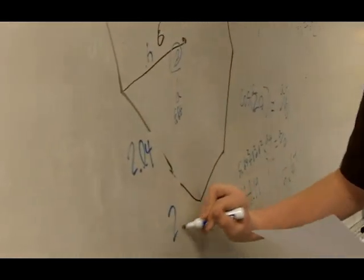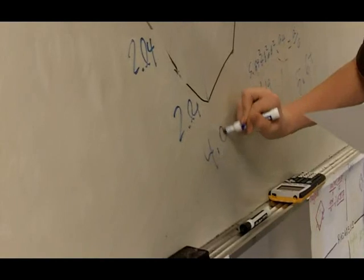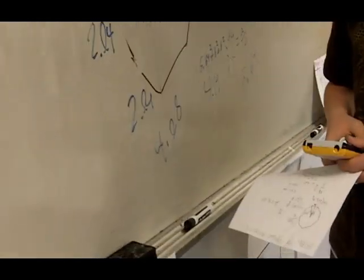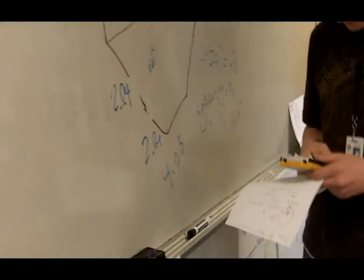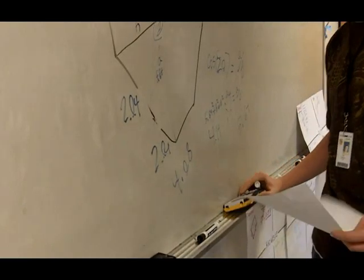So then you times that times 2, and you get 4.08. And you times that times 9, and you get 36.72.